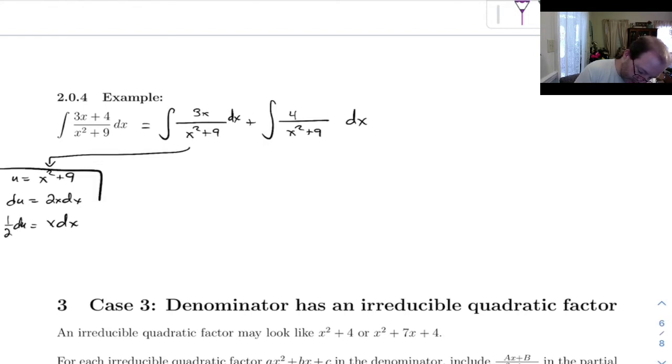And so this is going to give us, let's see, integral 3, x dx becomes 1 half du. And this down here is x squared plus 9, that's just u. So I wind up with 3 halves, integral of 1 over u du.